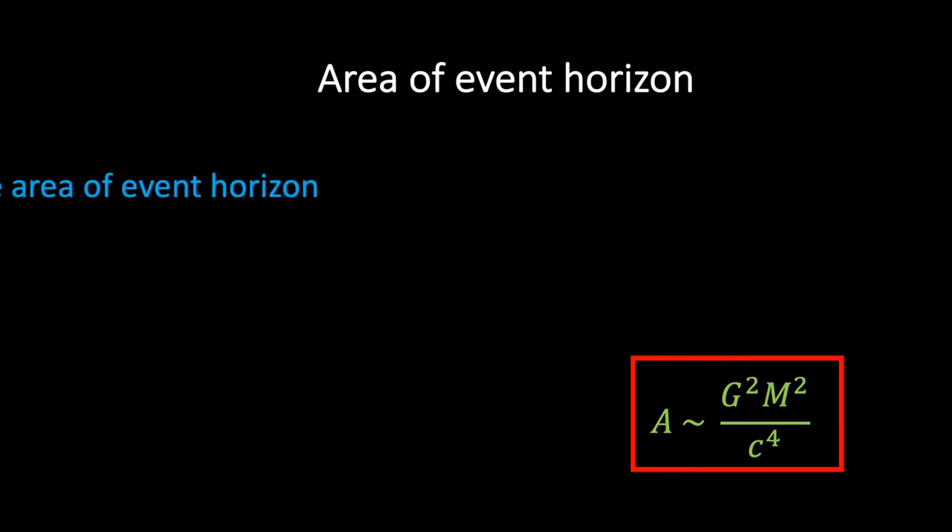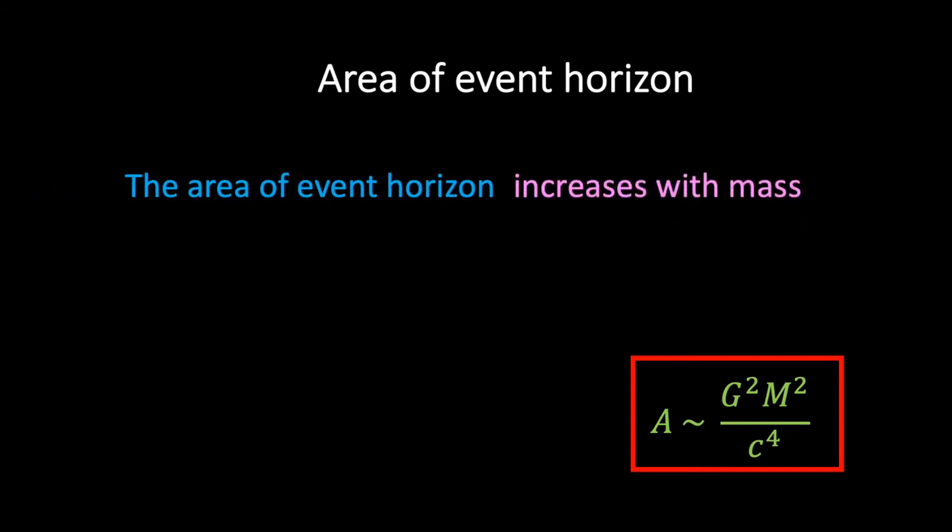In other words, the area of the event horizon will increase as more mass falls into the black hole. More specifically, we see that if the mass of our black hole doubles, then the area of the event horizon will quadruple.